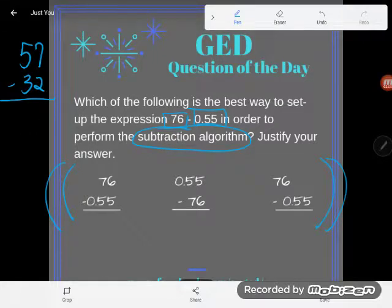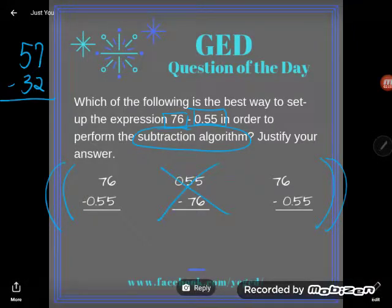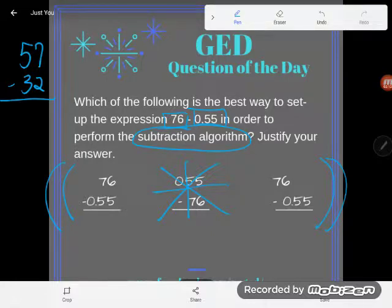So I will make sure that we have one where the 76 is on the top and the 0.55 is on the bottom. So I'm going to rule out this number. Okay, so I'm glad if you ruled out that number, most students do.